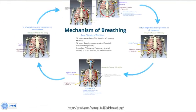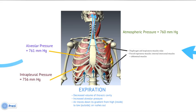Now we breathe out. The dome-shaped diaphragm relaxes back upward, and the external intercostal muscles also relax. During expiration, the inspiratory muscles relax, so the expanded thoracic cavity starts to decrease. There are also forced expiratory muscles — the internal intercostals and the abdominal muscles — but during quiet breathing, expiration happens passively as the diaphragm and inspiratory muscles relax.